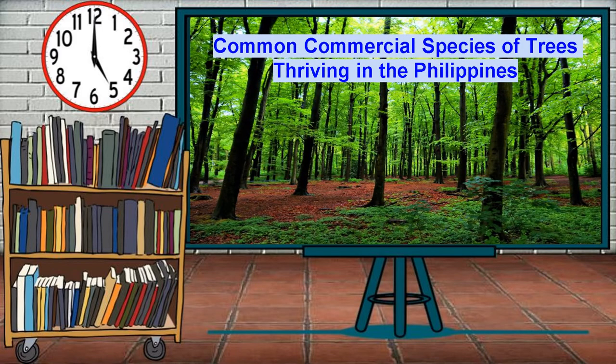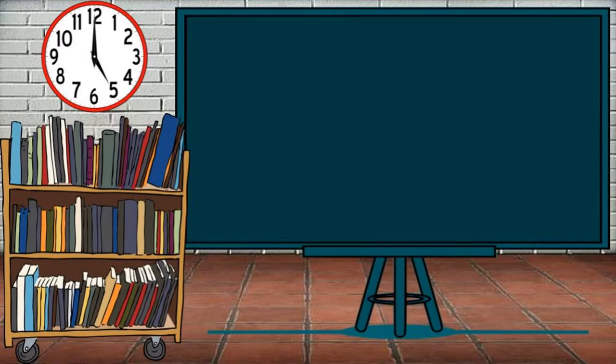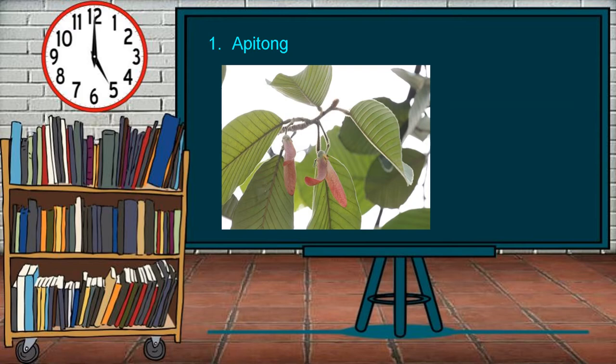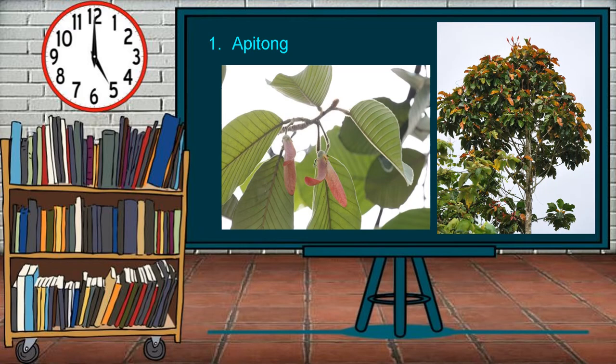Common commercial species of trees thriving in the Philippines. As the country began to industrialize, forests were cleared out for timber and for space to develop. To refresh these areas, the government and many private organizations have initiated different greening and other environmental programs. First is the apitong — a medium-sized to large resinous tree growing to a height of about 40 meters. The trunk is straight, cylindrical, branchless up to 30 meters, and up to 125 centimeters in diameter. Flowers are large, about 5 centimeters long, rose-colored, and fragrant.